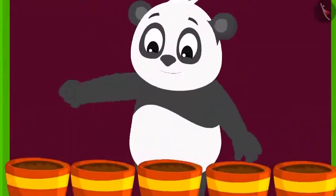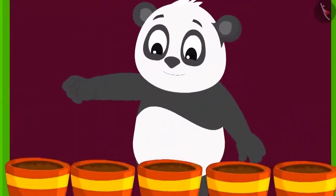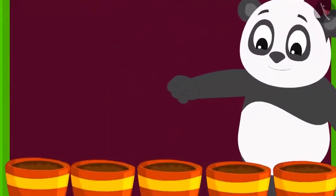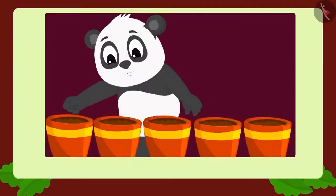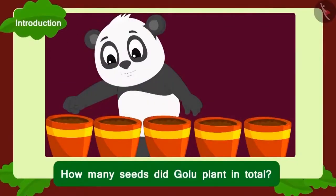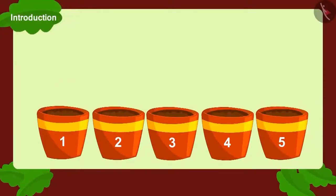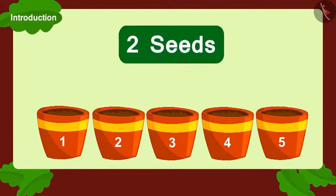Golu planted two seeds each in five pots. Can you tell how many seeds did Golu plant? In all, Golu planted seeds in five pots. And how many seeds did he plant in each pot? Two seeds.